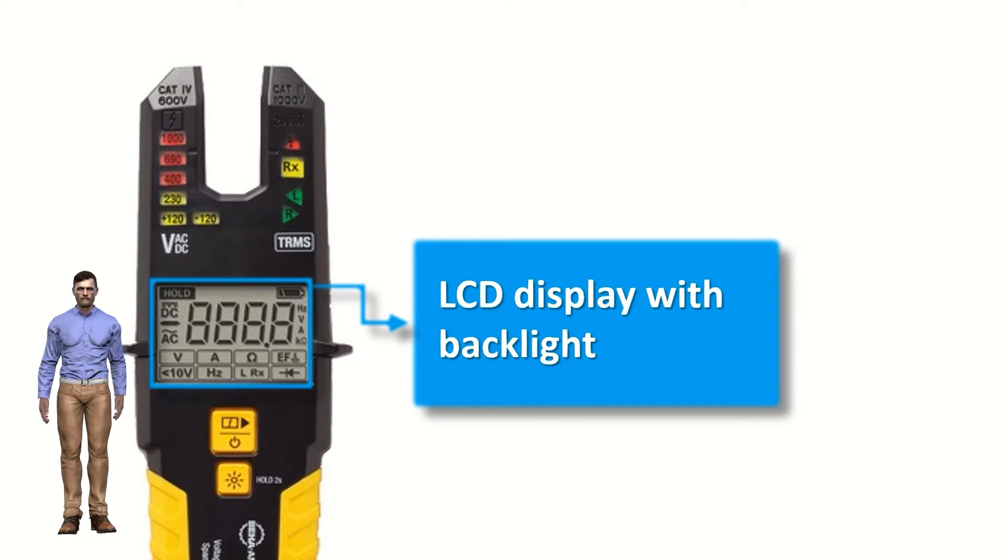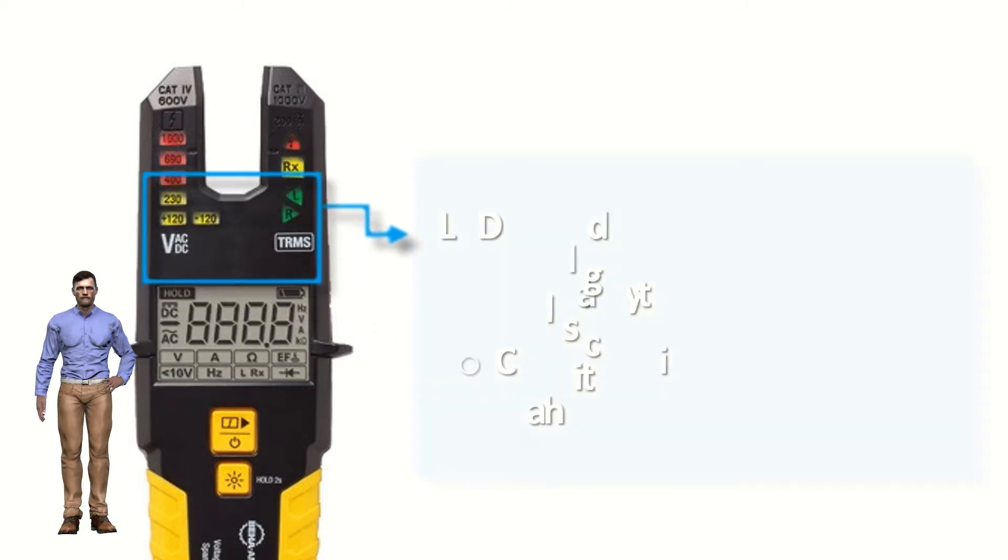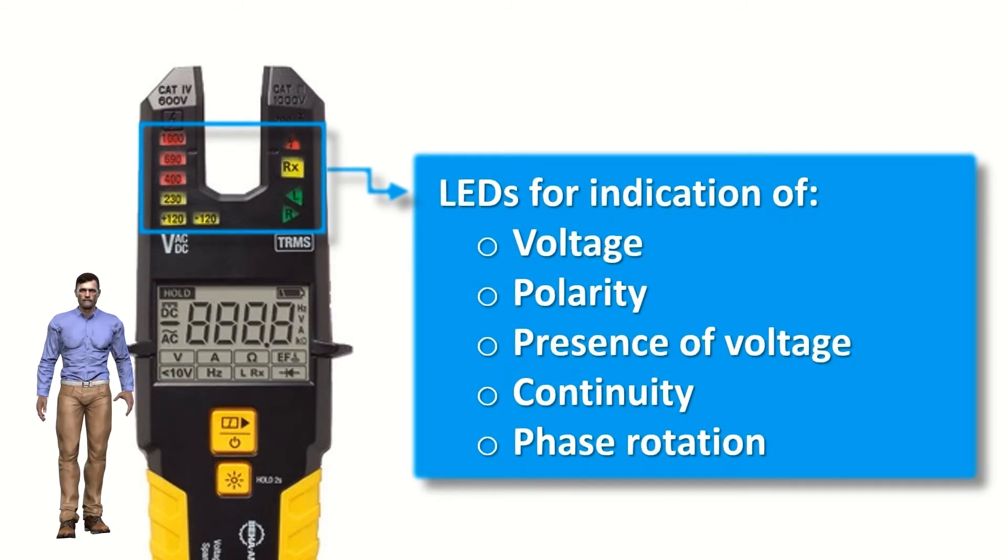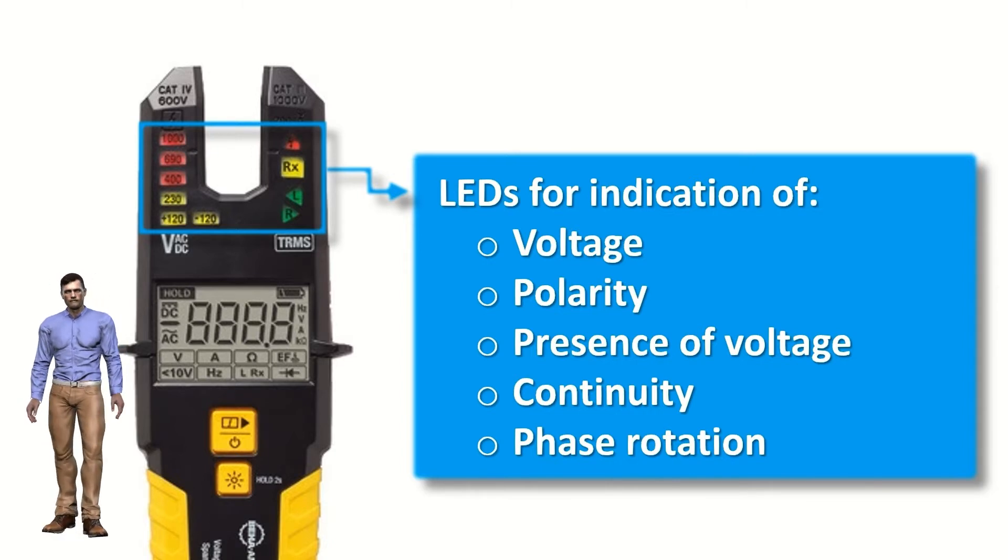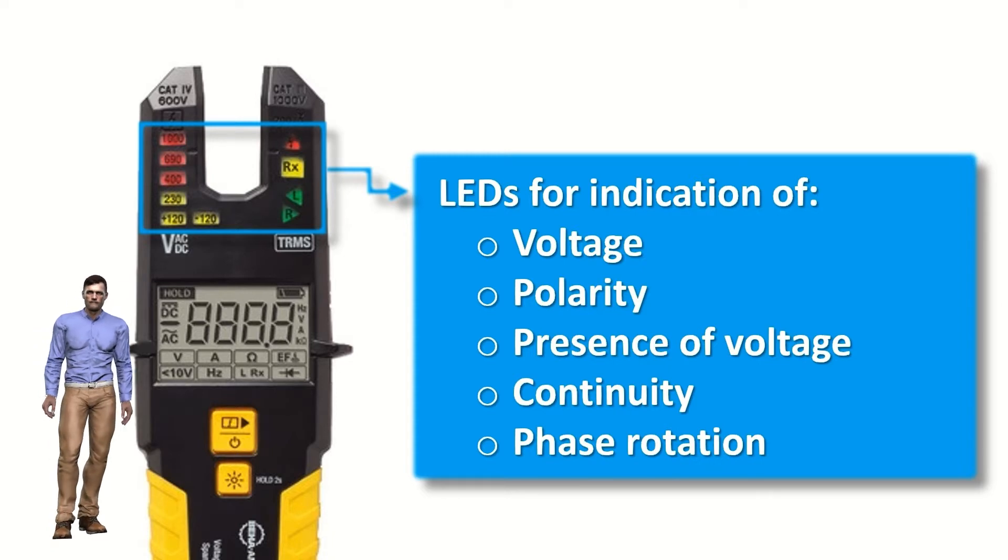It has an LCD display for providing the measurements and indications, as well as LEDs for indications of voltage, polarity, continuity and phase rotation. It also includes a LED to warn us of the presence of dangerous voltage, even if the batteries are dead. In addition to these visual indications the clamp also includes sound signaling, and even has vibration signaling.